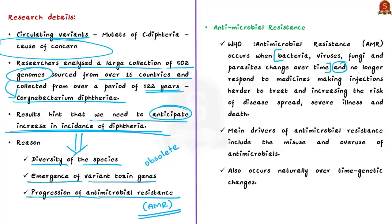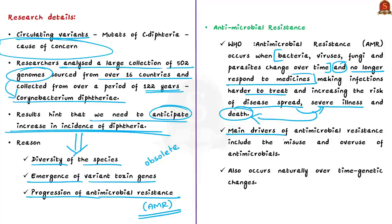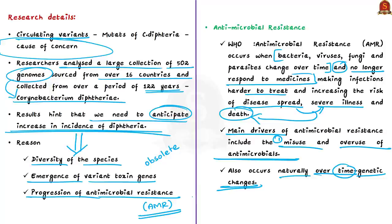Antimicrobial resistance occurs when bacteria, viruses, fungi, or parasites change over time and no longer respond to medicines, making infections harder to treat and increasing the risk of disease spread, severe illness, and death. The main drivers are misuse and overuse of antimicrobials. For example, if diphtheria mutates into a genetically changed variant, the previously effective antibiotic like penicillin may have no effect — this is the challenge imposed by antimicrobial resistance.